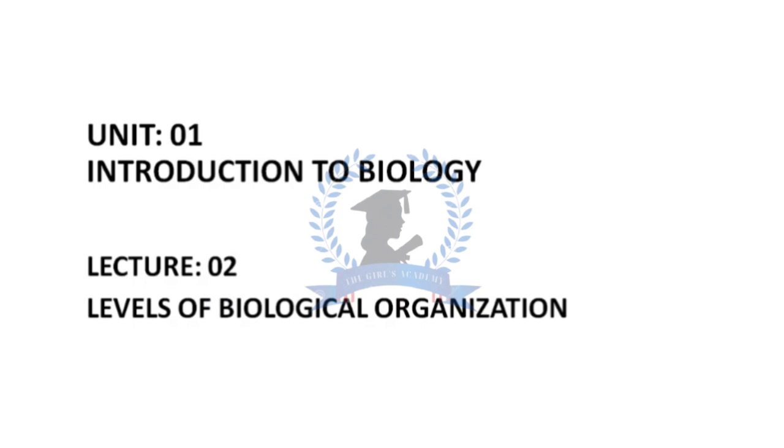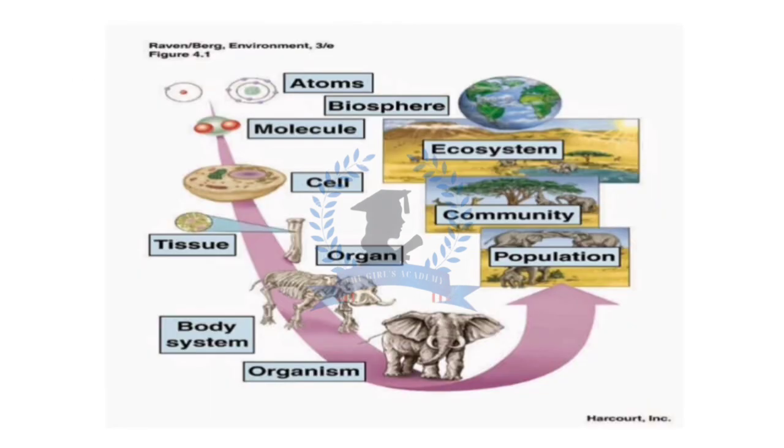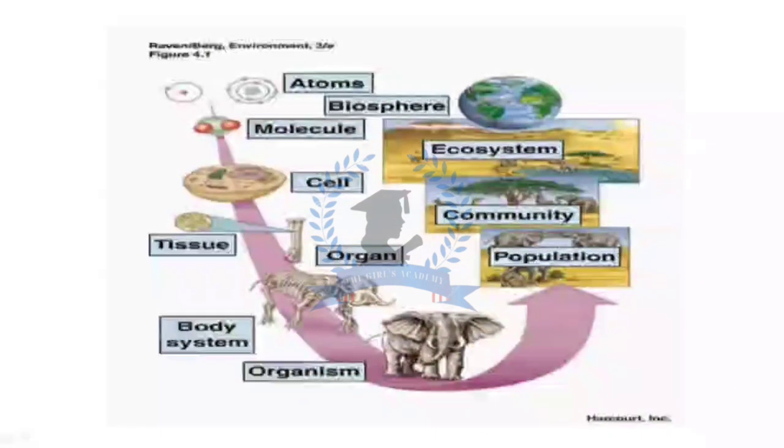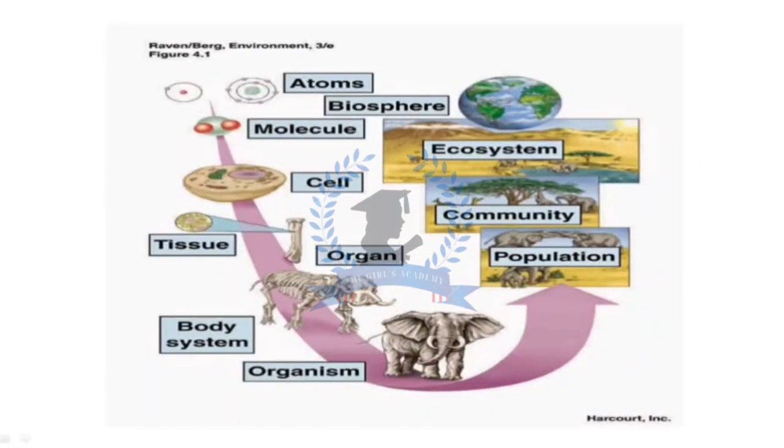Here are these levels: number one atoms, number two molecules, number three cell, number four tissue, number five organ, number six body system, number seven organism, number eight population, number nine community, number ten ecosystem, and number eleven biosphere. We will see all these levels in detail so that we can understand them properly.